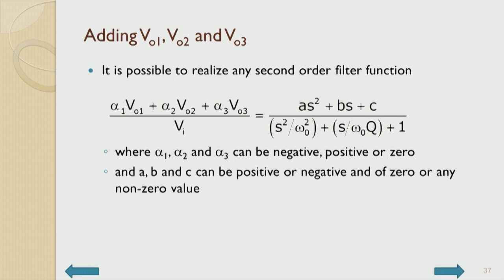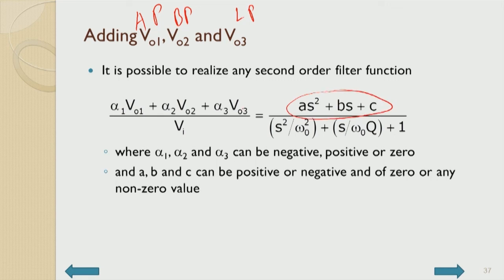By adding alpha1 times V naught1 (high pass), alpha2 times V naught2 (band pass, with negative sign), and alpha3 times V naught3 (low pass), one obtains a numerator of the form A times S squared plus B. By choosing alpha1, alpha2, and alpha3 positive, negative, or zero, one can locate the zeros of this polynomial anywhere on the S-plane — on the imaginary axis for a notch, or elsewhere. The poles are always on the left half plane as a complex conjugate pair or on the negative real axis, giving stable filter systems.